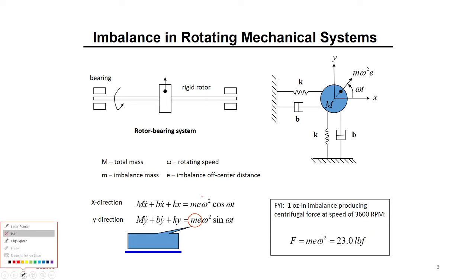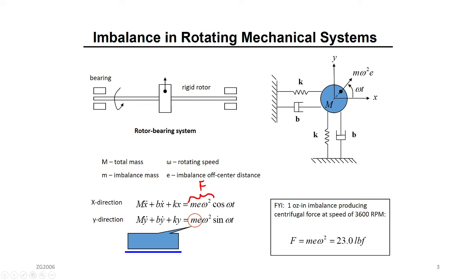This is the centrifugal force — it's a force in Newtons. At a fixed speed this can be calculated as the magnitude of the force. This is the equation of motion in the x direction, and this is the equation of motion in the y direction. This is an example of how they calculate the imbalance force in the field. You tell them how much imbalance you have, and at a fixed speed you can calculate the imbalance force.